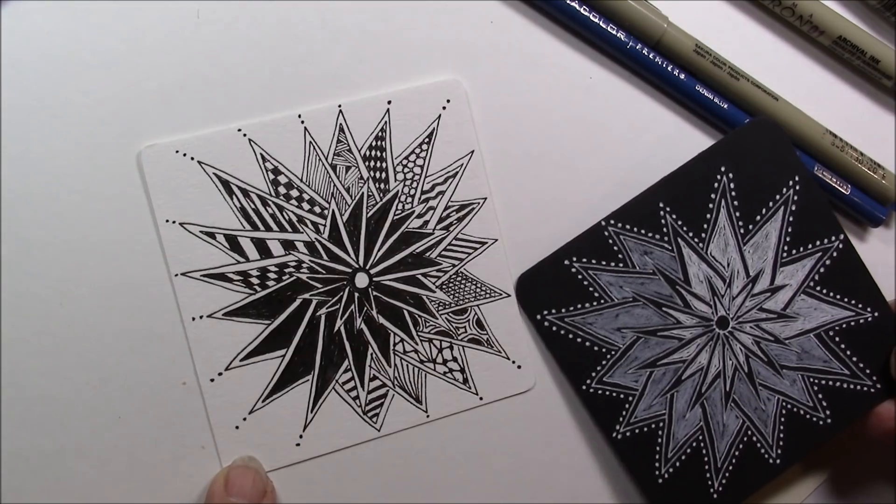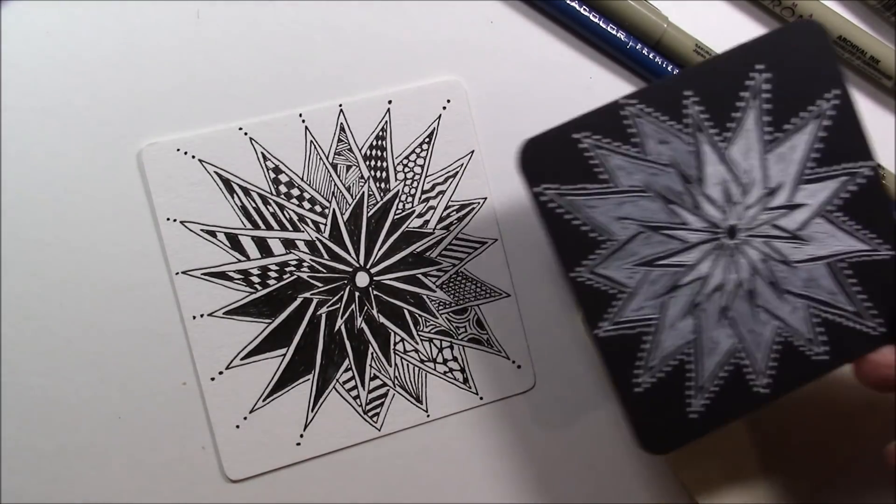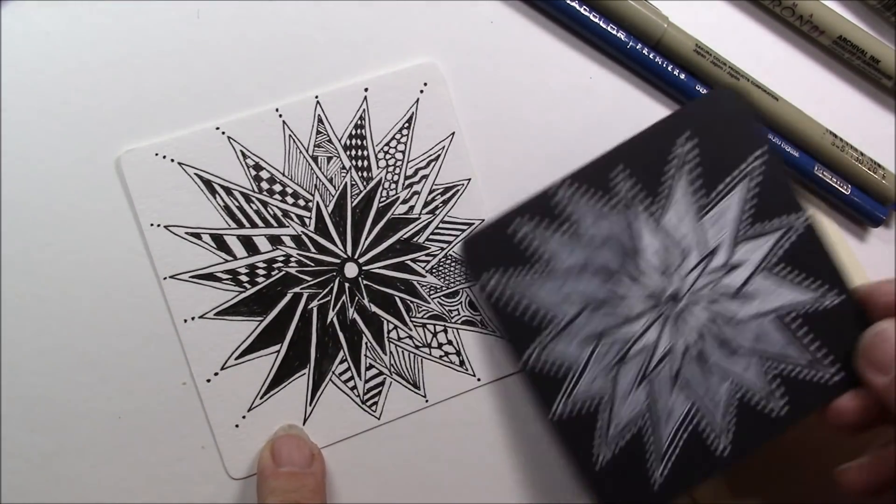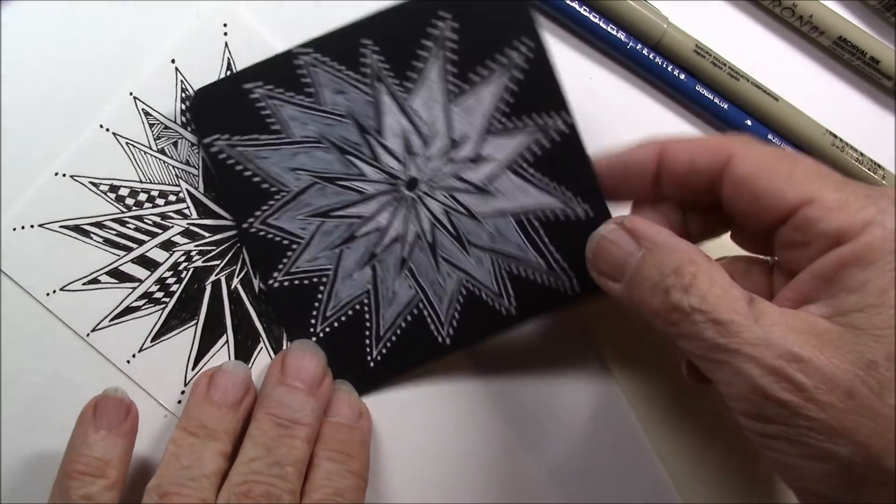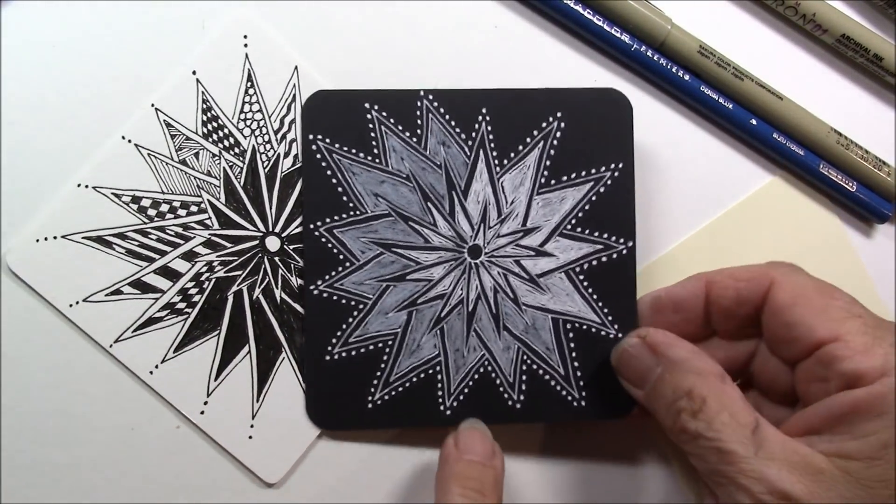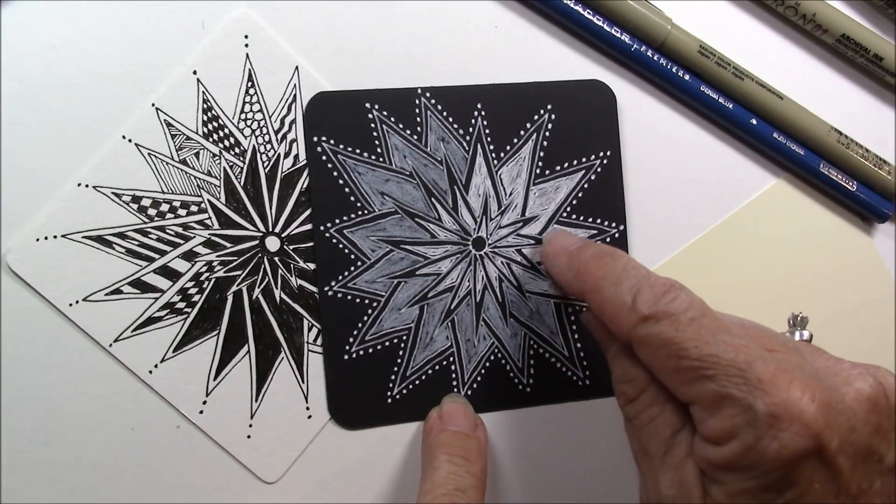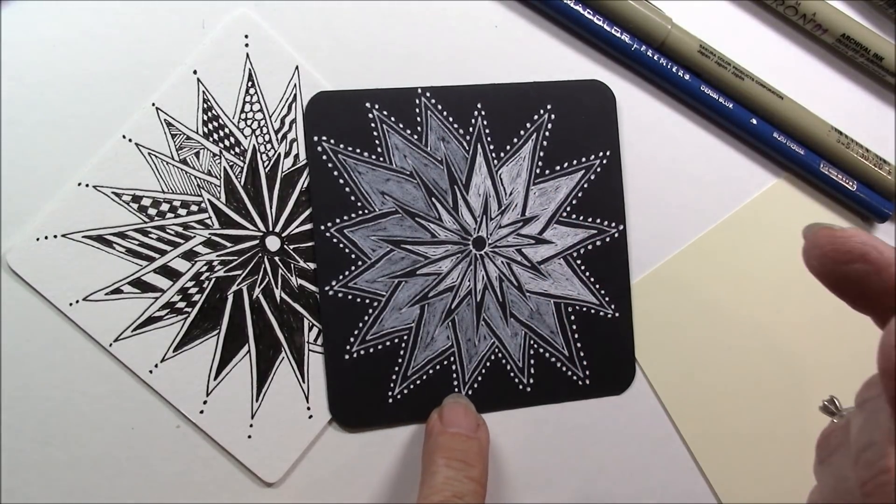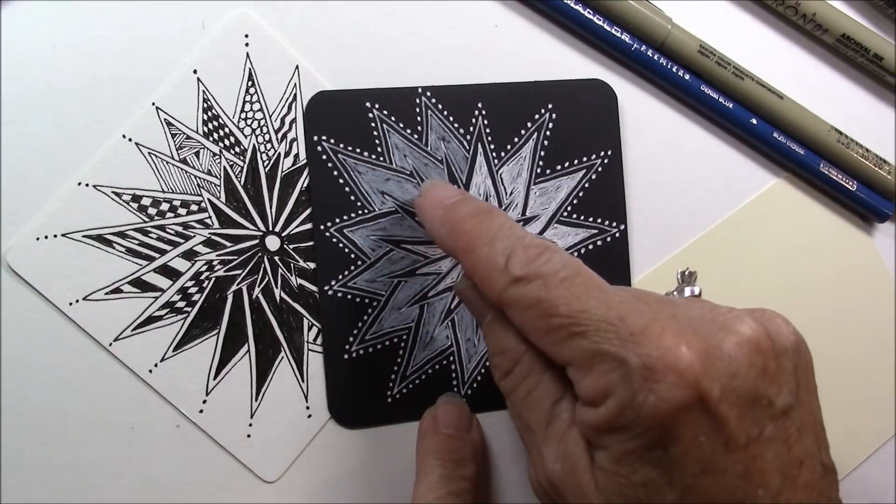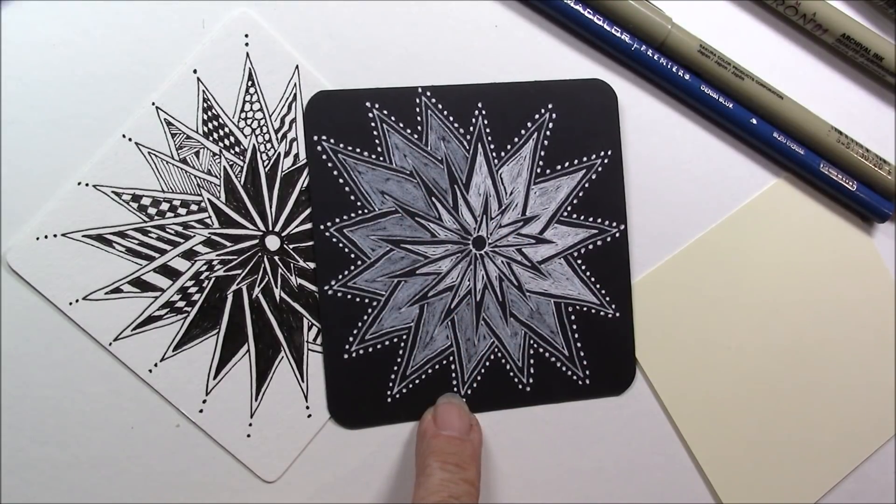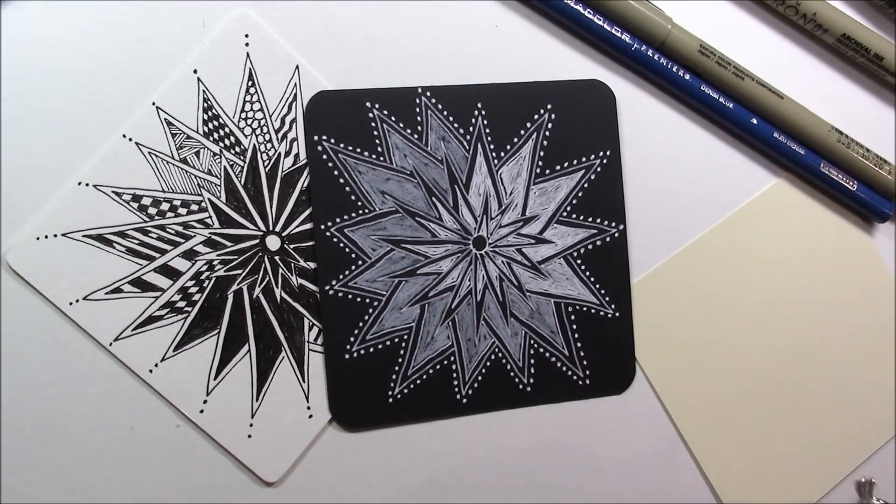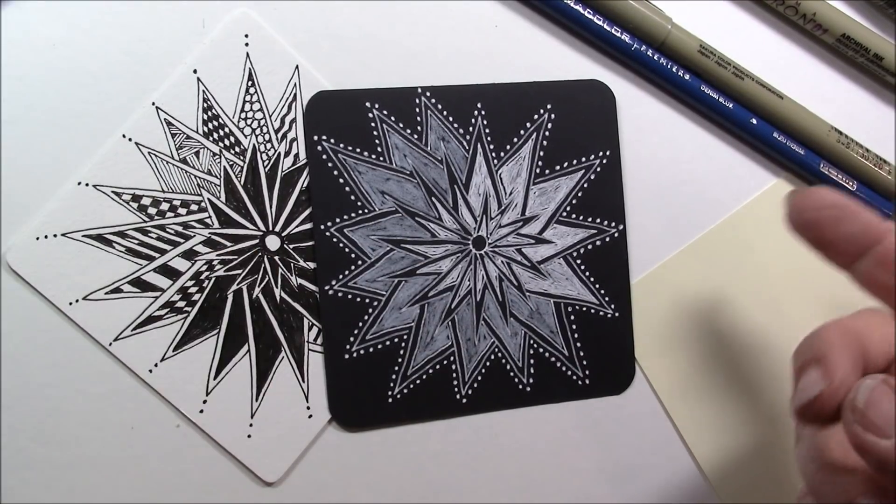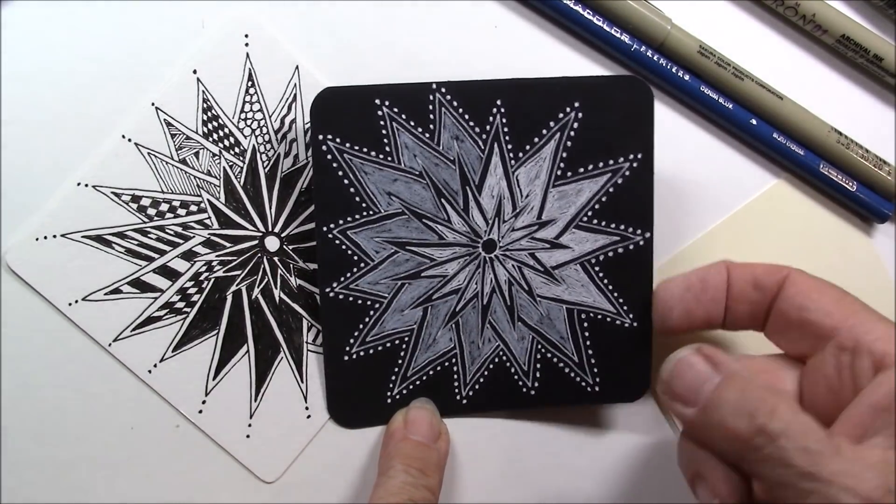I love the variations that you can do. I just had lots of fun because you can put tangles within tangles, and I did it on black with white, and you can see here that the darker white I use my Gelly Roll, and the lighter I just used a Prisma white pencil just to see what the difference would be, and I like both.